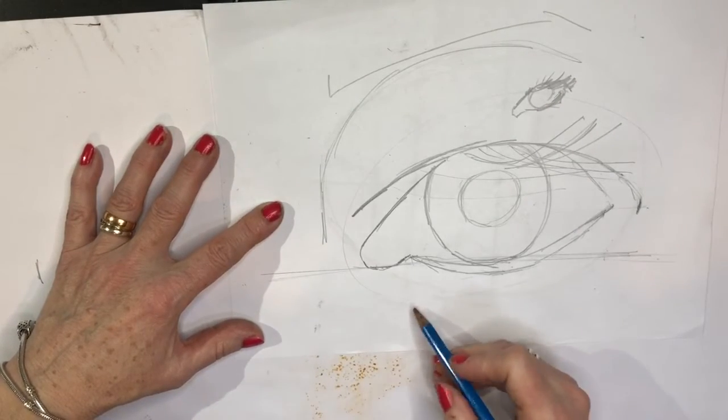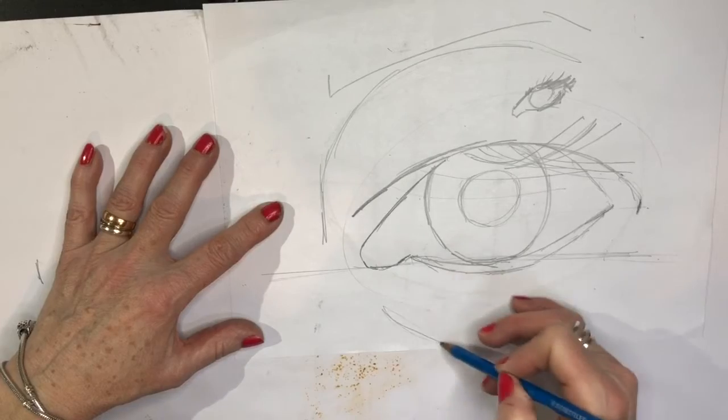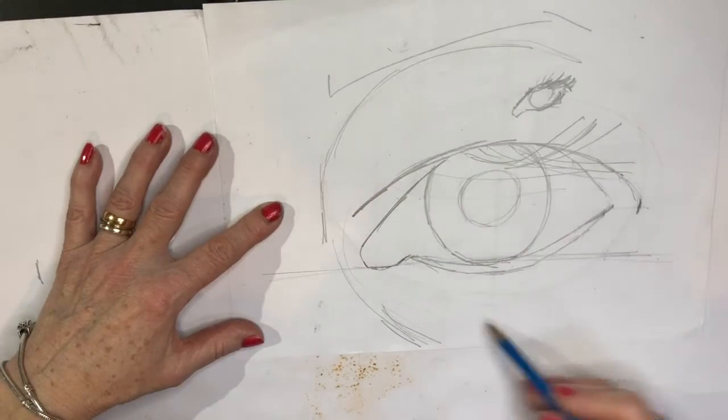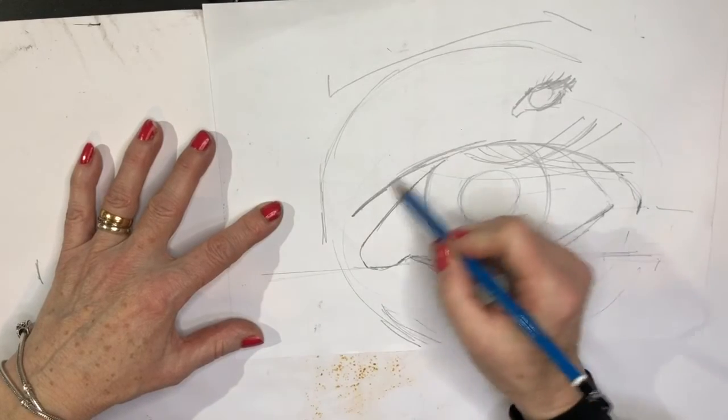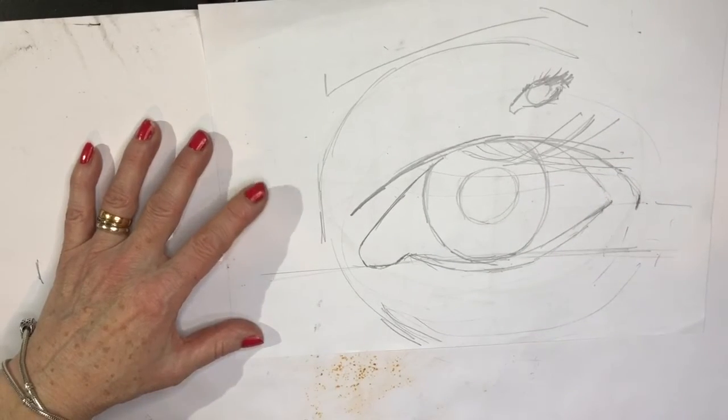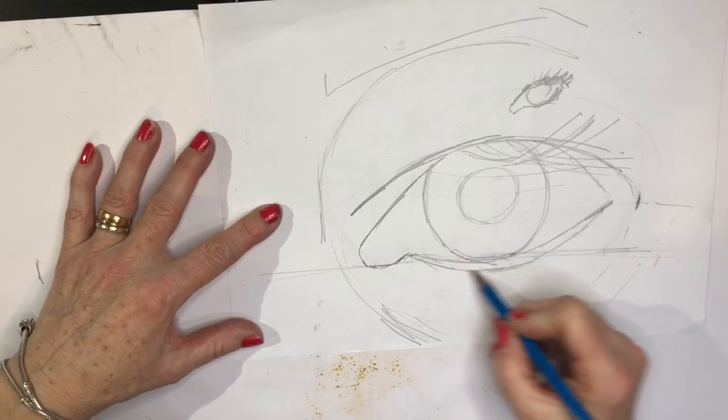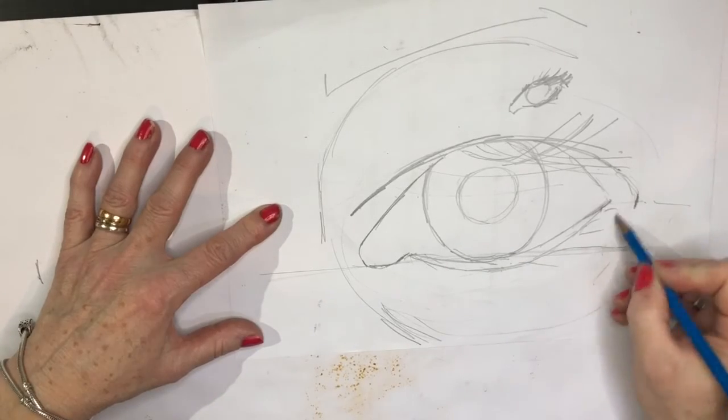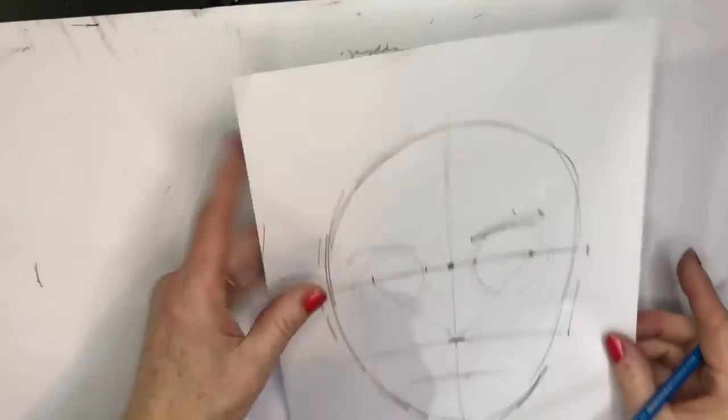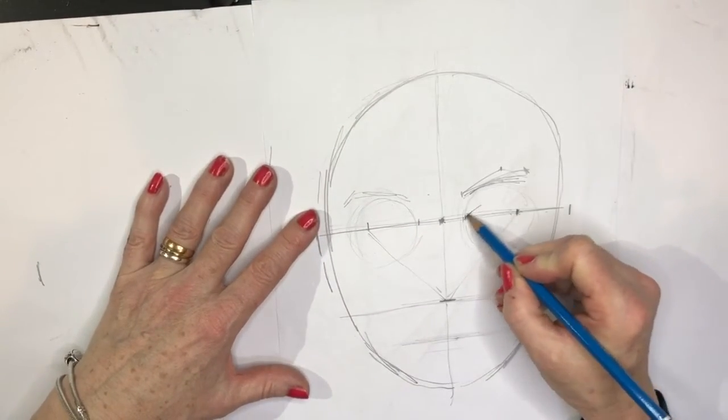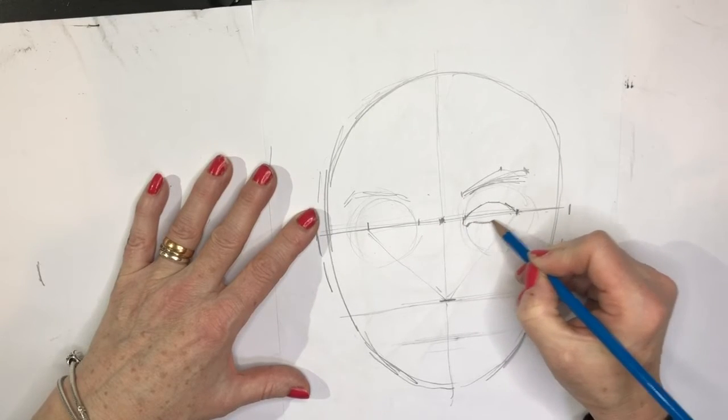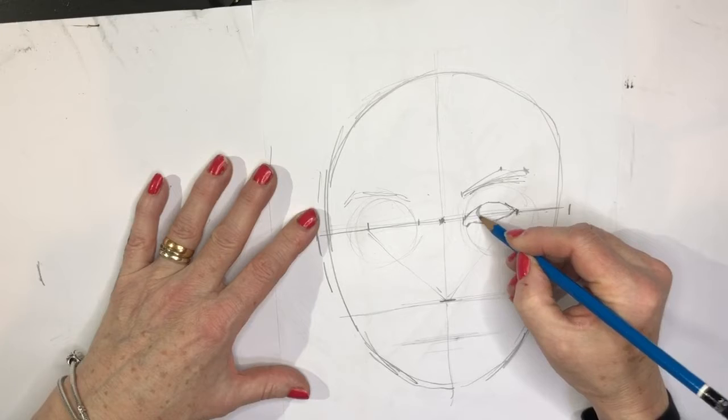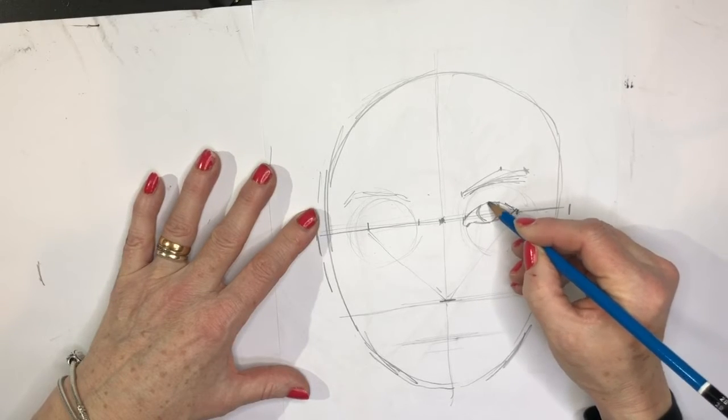You've also got the continuation of your eye socket where you might have some laughter lines at the side and things like that. So really have a good look and look at how your lashes are growing. Back to this side so let me give myself an eye, just quickly draw that in like so.